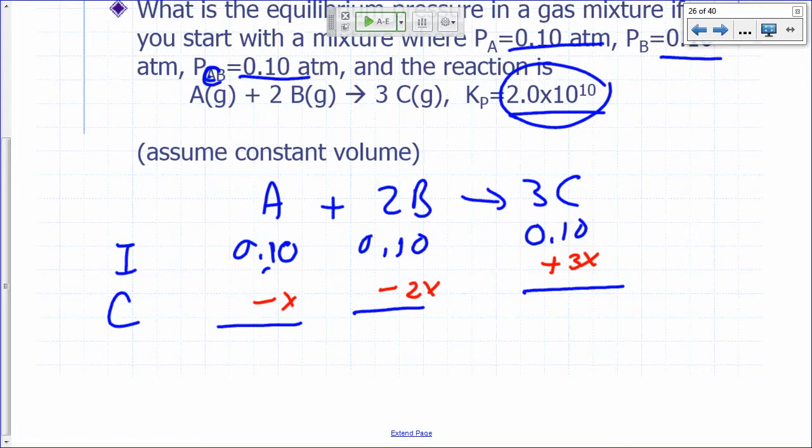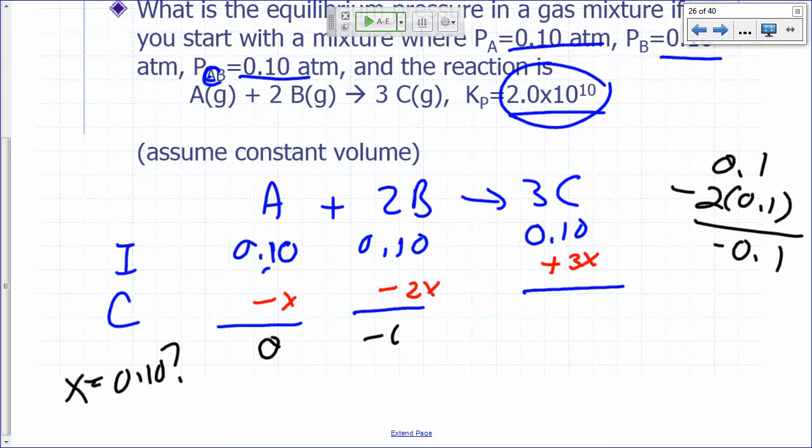What if x is 0.1? Try x equals 0.1. So what's 0.1 minus 0.1? Zero. What's 0.1 minus 2 times 0.1? Negative 0.1. Can I have negative pressure? No. So that means I cannot use up my A. I have a limiting reactant here. What's my limiting reactant? B. B will run out first, so I'll have some excess A. So this is not going to work. X cannot be 0.1.